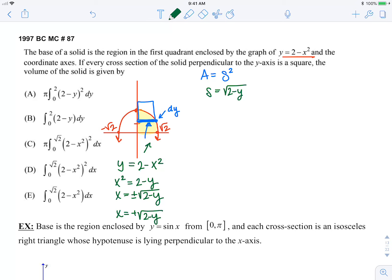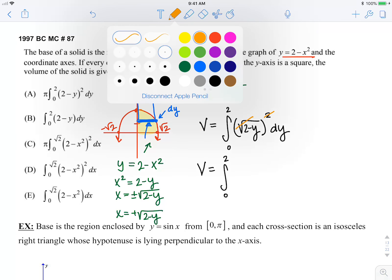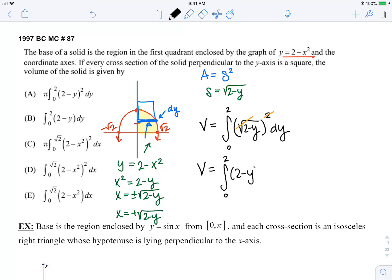So now we can plug in to our formula for volume. Volume is the integral from my lowest y value to my highest y value of my side squared multiplied by the thickness. My side is square root 2 minus y, so my volume is the integral from 0 to 2. This square cancels the square root, and we're left with 2 minus y dy. And that answer is b.